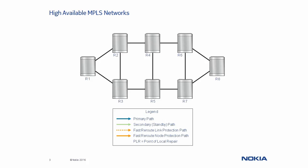Suppose we have an MPLS tunnel between routers 1 and 8, and the blue arrow represents its primary path. If anything fails, a link for instance, then the router that detects the failure needs to send a path error message back to the headend router. The headend router, in turn, can switch the traffic over onto a secondary path if one exists. Note that the delay between the detection of the failure by router 6 and the activation of the secondary path by router 1 may cause a number of packets to be dropped at the point of failure.